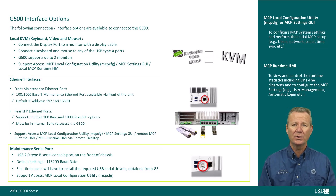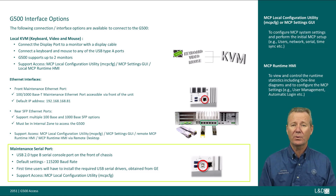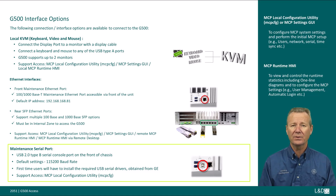The maintenance serial port allows the user to connect to the device via a USB serial cable. It is a USB 2.0 type B serial console port on the front of the chassis. Default settings are 115,200 baud rate. First-time users will have to install the required USB serial drivers. More details can be found in slide 14. We'll also cover support access via the MCP local configuration utility.